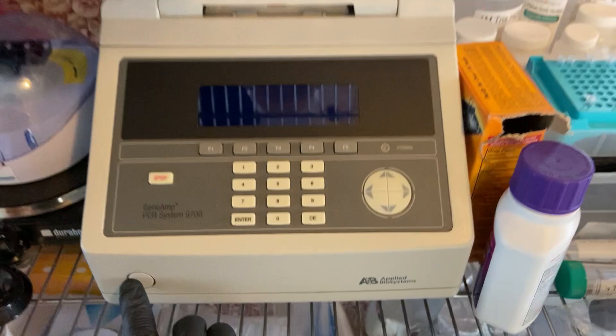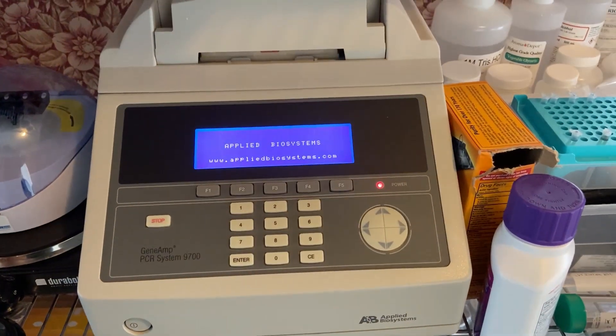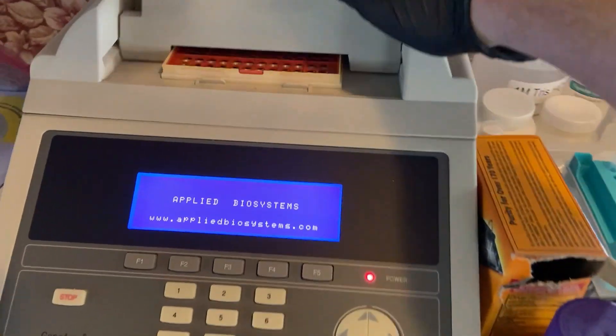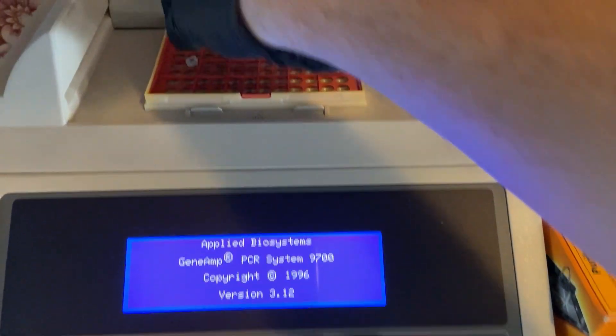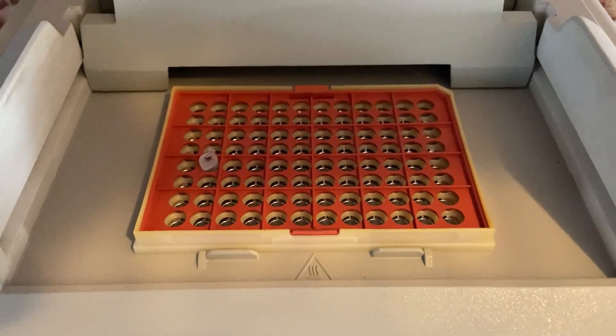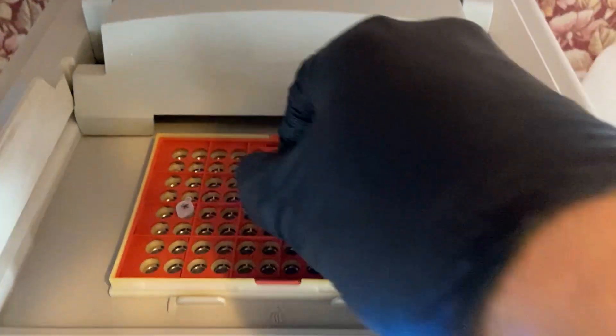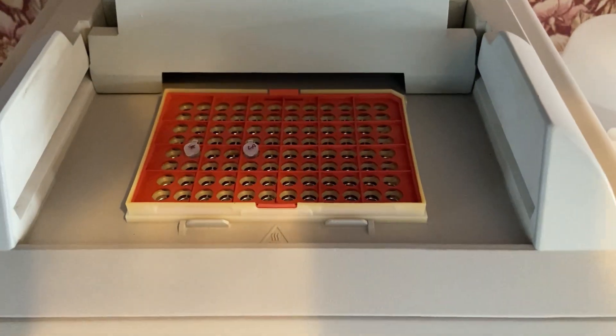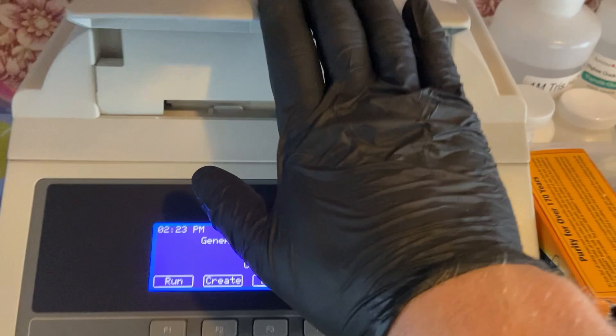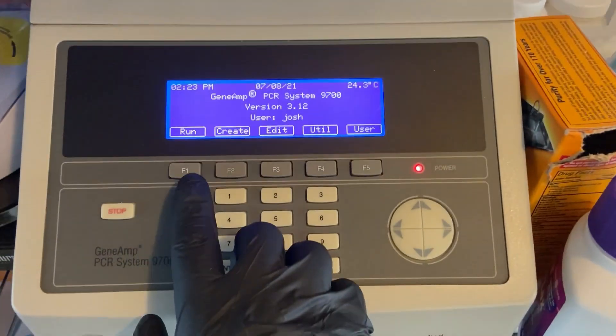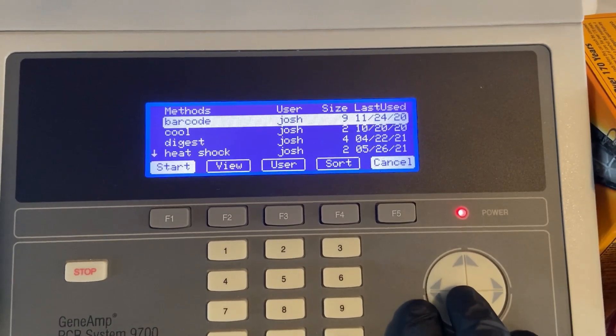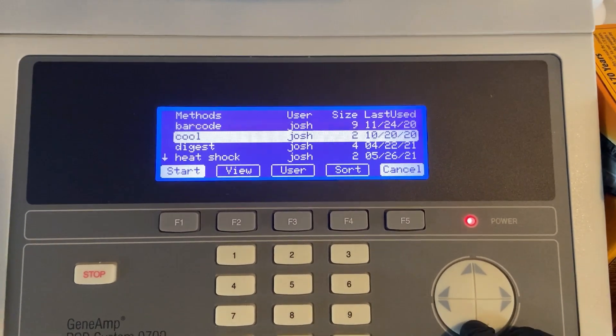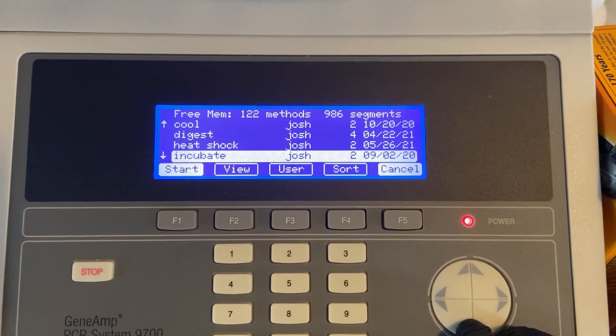So the next step here is we're going to move those microcentrifuge tubes to the thermocycler where we're going to allow them to incubate at 95°C for 10 minutes. After which we're going to centrifuge it for 5 minutes at 10,000 RPM. Or if you don't have a centrifuge that spins that fast, just extend the length of time that you allow them to spin so that all of the cell debris can collect at the bottom of the tube and the DNA can rise to the top.